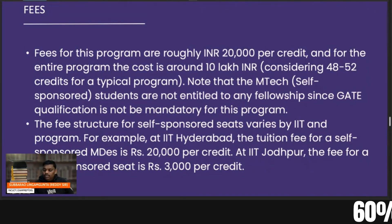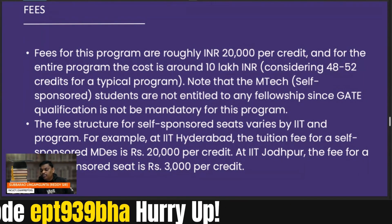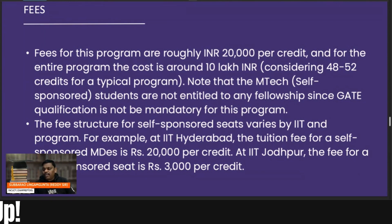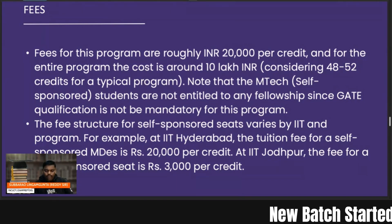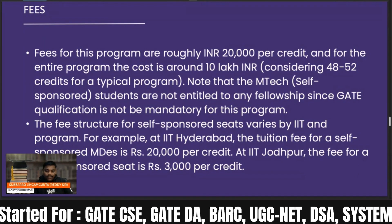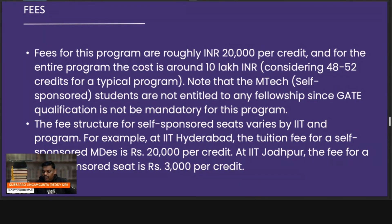Regarding fees, approximately 20,000 rupees per subject — not per course. This varies from IIT to IIT. In a two-year M.Tech, there may be approximately 50 courses, which totals approximately 10 lakh rupees. In some IITs it may be less, around 5 lakh. For example, IIT Hyderabad charges 20,000 per credit for self-sponsored M.Des, while IIT Jodhpur charges 3,000 rupees per credit. You should verify the fee structure for each IIT and program.